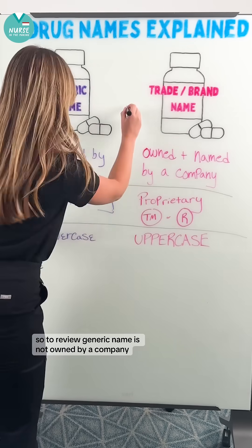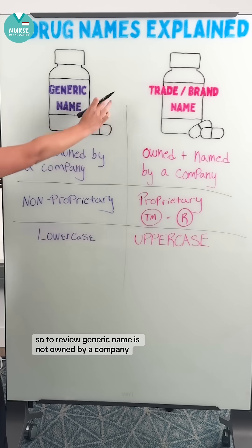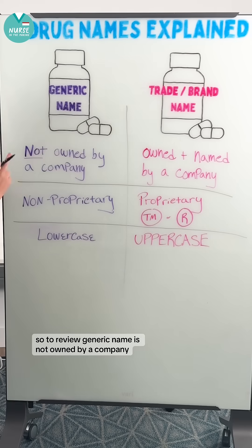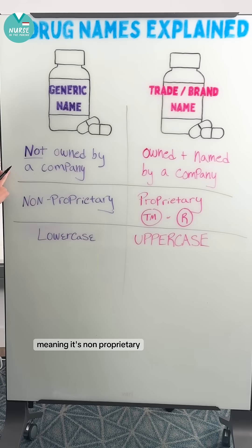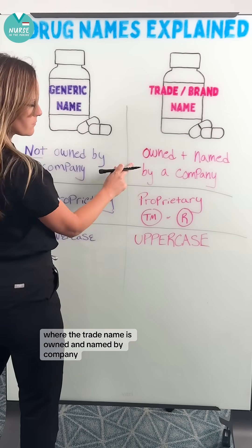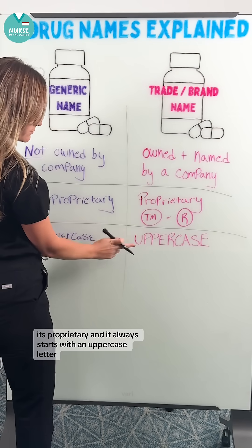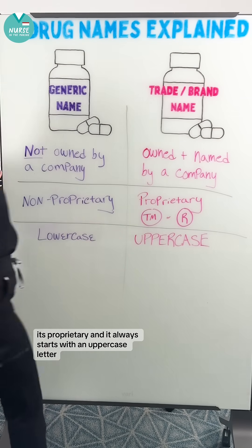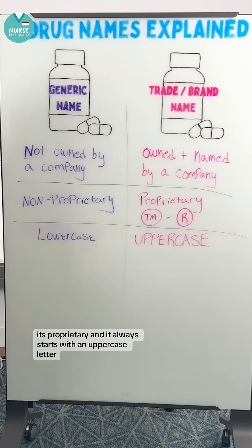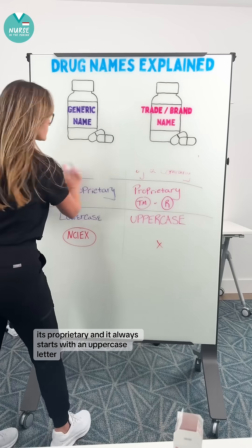So to review: the generic name is not owned by a company, meaning it's non-proprietary, and it's always lowercase. The trade name is owned and named by a company, it's proprietary, and it always starts with an uppercase letter.